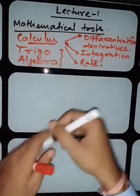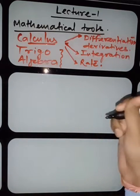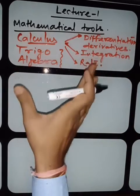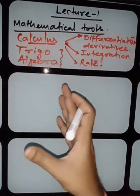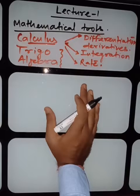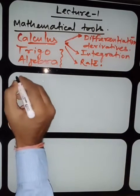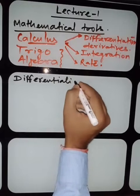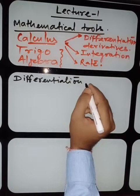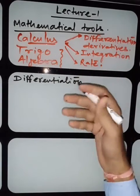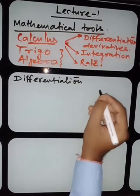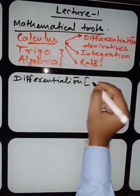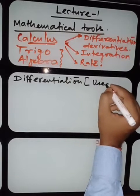Without wasting much time, I would like to introduce you to the syllabus — the mathematical tools — and how you have to use them for standard 11. We will start with differentiation in our classroom lectures. I want to just gear you up and accelerate you so that you can help yourself. Differentiation, as I told you, was used to find the tangent to a curve.